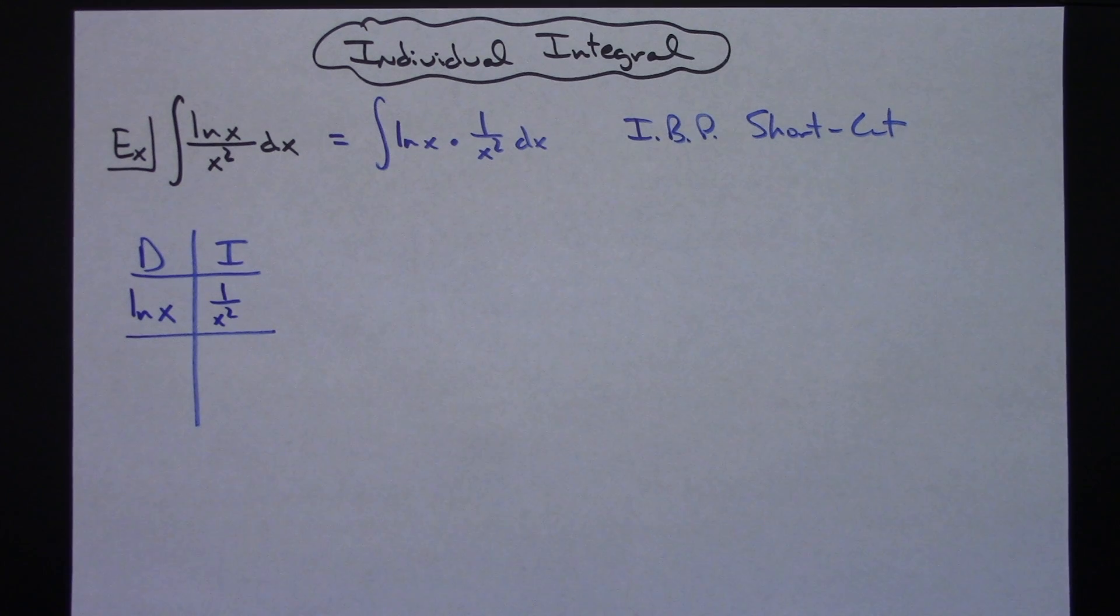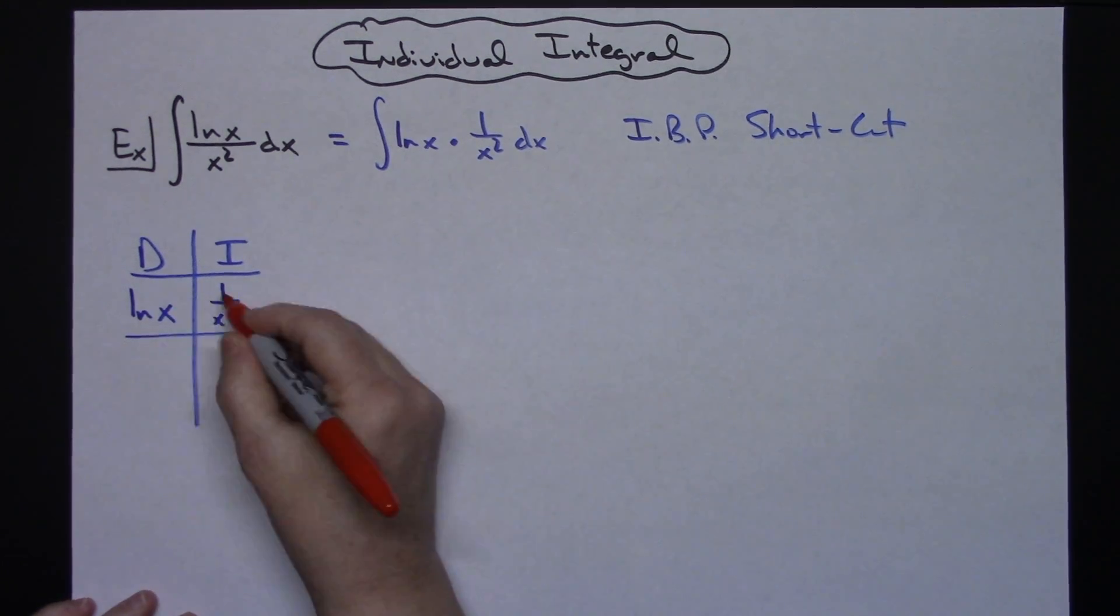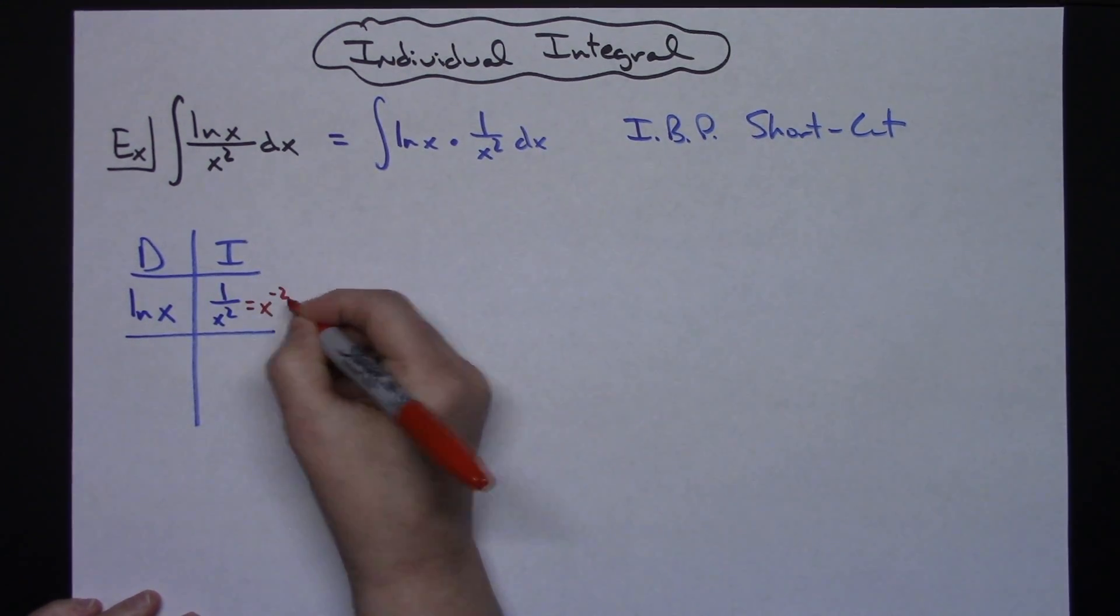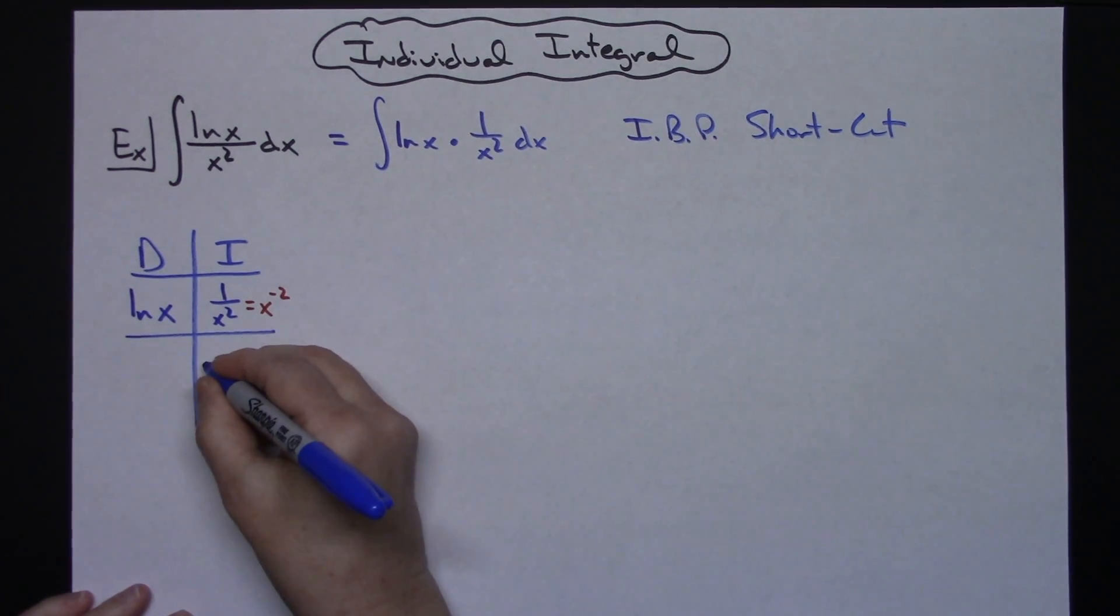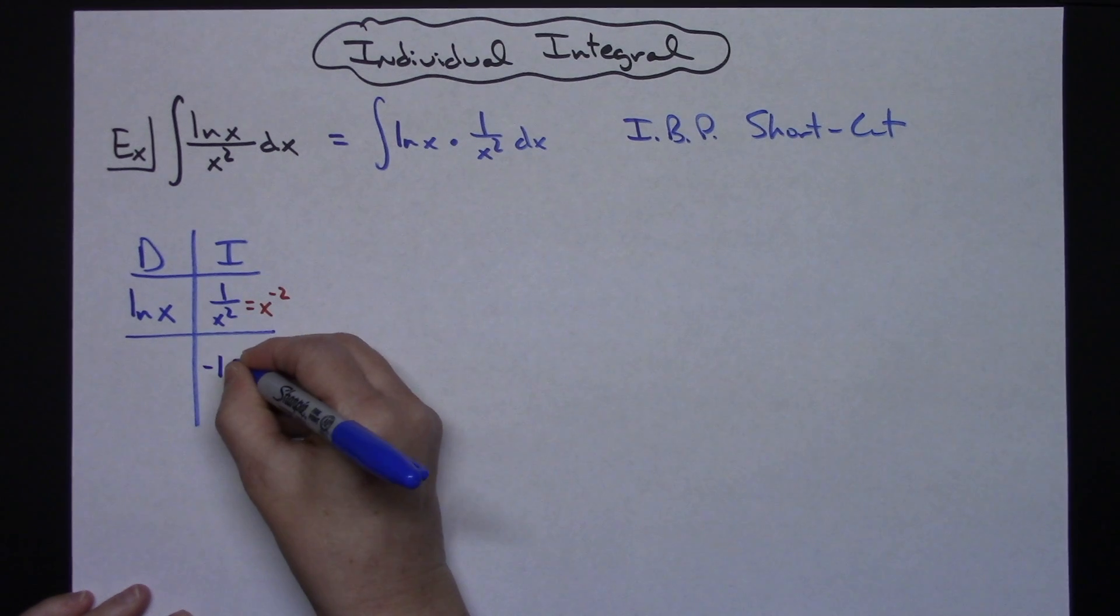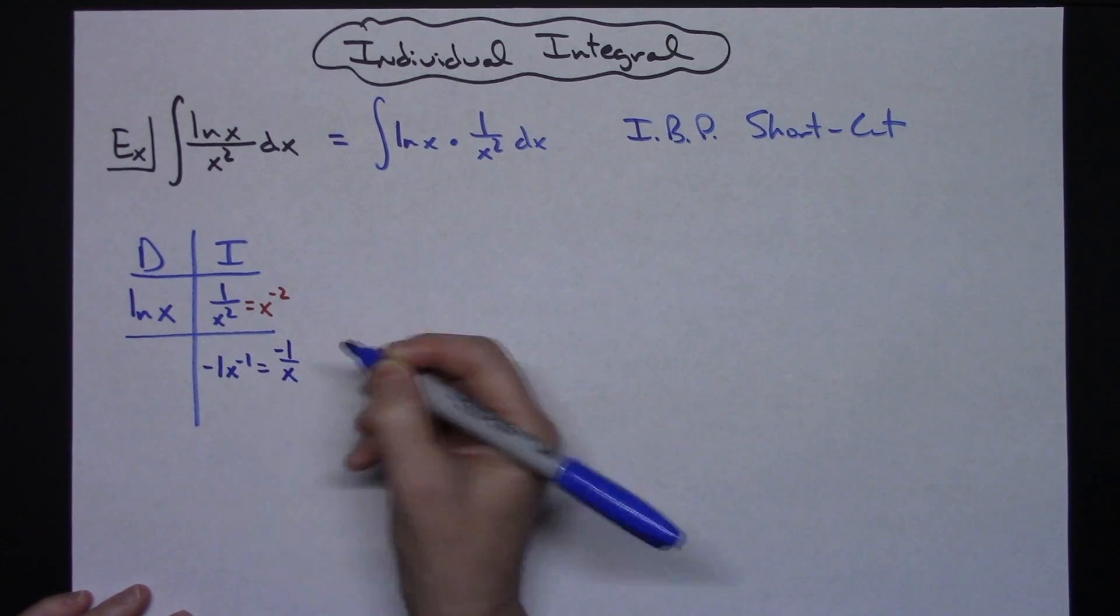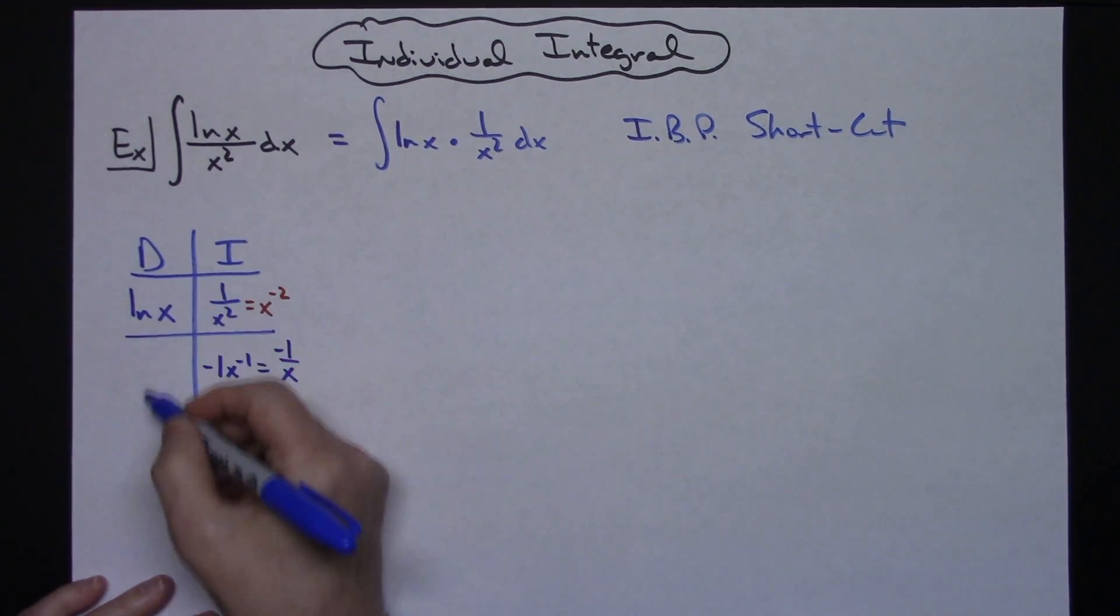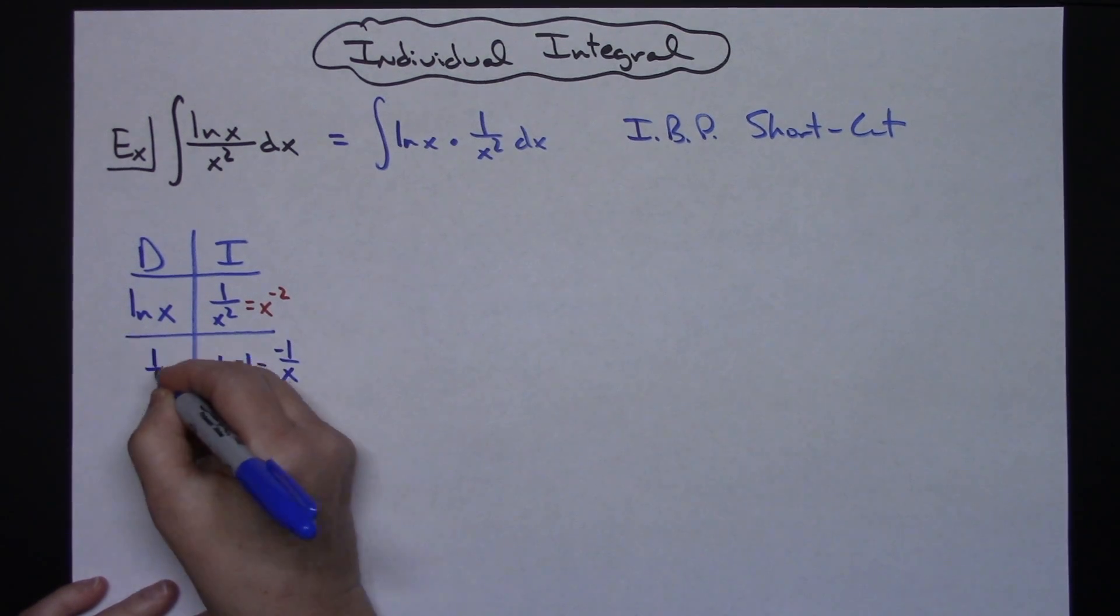Now at this point you're going to start taking the derivative and taking the integral. If I look at this one over x squared as x to the negative two, that's going to let us integrate that really easily. So we'll have a negative one x to the negative one, and then rewriting that so we've got a negative one over x would be nice. Now taking the derivative here, derivative of natural log of x is going to be one over x.